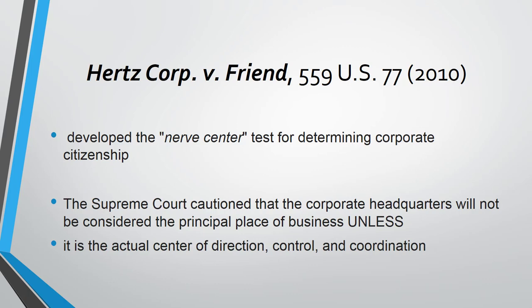What the Hertz case said is that courts should look for where the actual center of direction, control, and coordination is — where is human resources, where are the executives living, where are policies being made and sent out to the rest of the business? That's the nerve center. For Amazon, it's probably in Seattle, and that's where Amazon is domiciled. If you were looking for personal jurisdiction over Amazon, it would be the courts in whatever county Seattle is in, in Washington State.